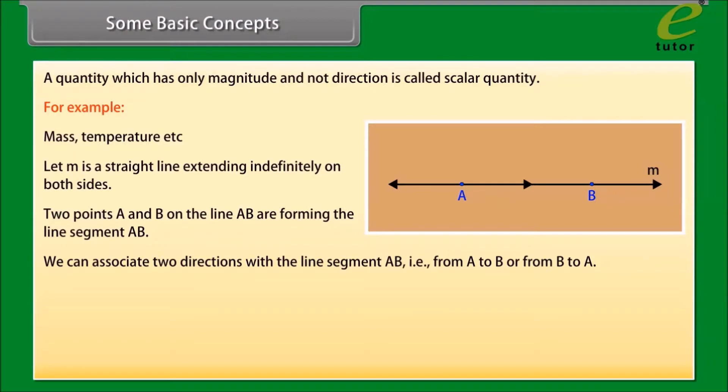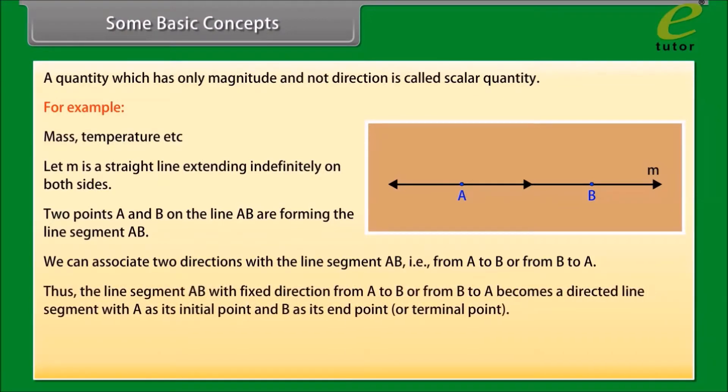We can associate two directions with the line segment AB, that is from A to B or from B to A. Thus, the line segment AB with fixed direction from A to B or from B to A becomes a directed line segment with A as its initial point and B as its endpoint or terminal point.